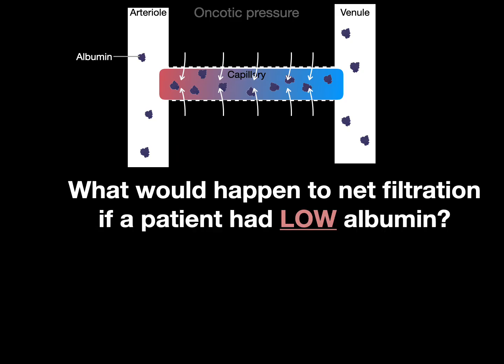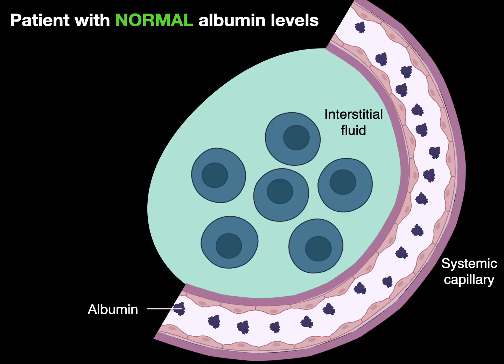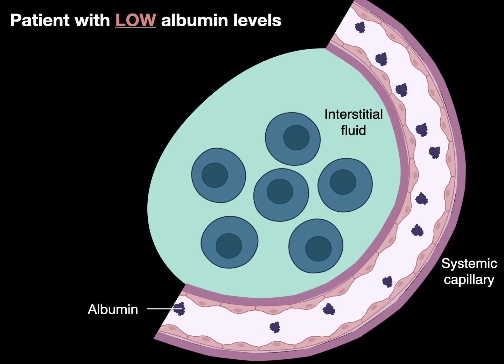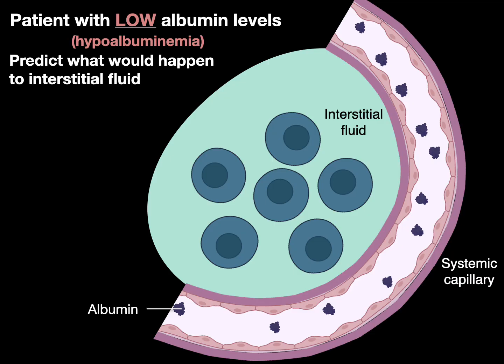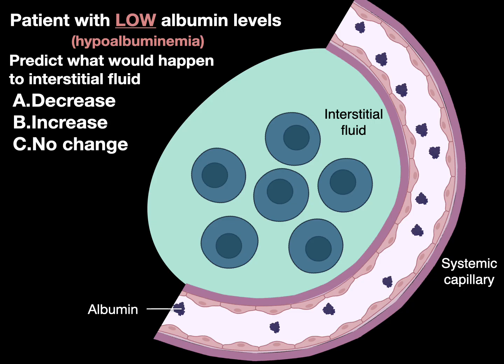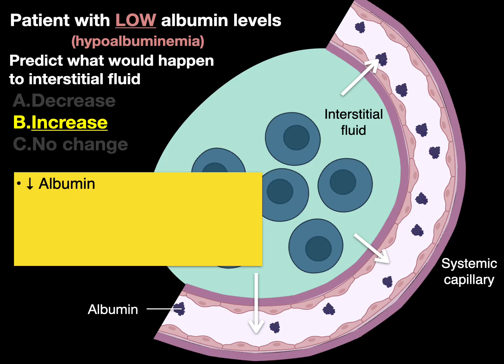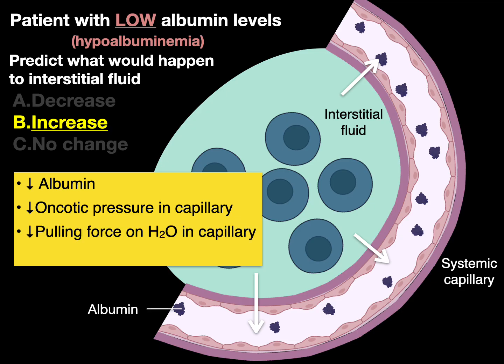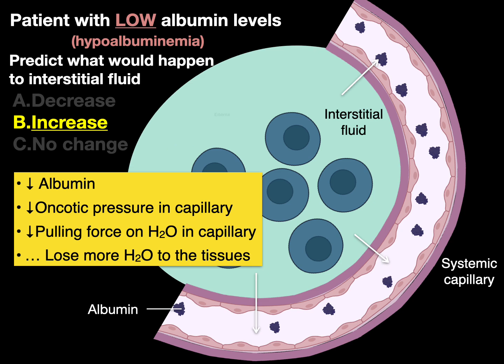What would happen to net filtration if a patient had low albumin — hypoalbuminemia? With low albumin, there is low oncotic pressure in the capillary, meaning a low pulling force drawing water into the capillary, so more water is lost into the tissues. Therefore, interstitial fluid would increase. This is another mechanism of edema — reduced oncotic pull leading to excess fluid accumulation in the interstitial space.